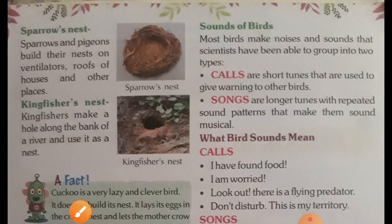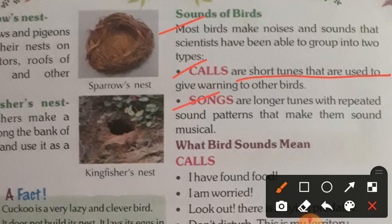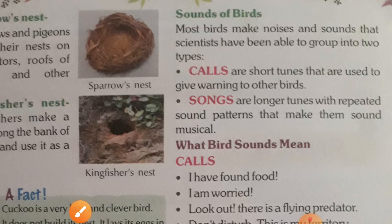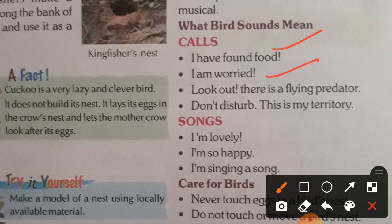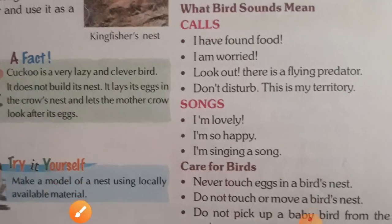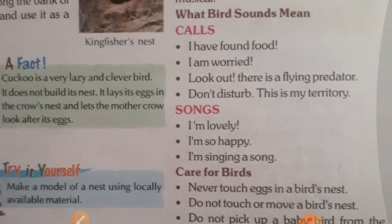Most birds make noise and sounds that scientists have grouped into two types: calls and songs. Calls are short tones used to give warnings to other birds — for example, 'I found food,' 'I am worried,' 'Look out, there is a flying predator,' or 'Don't disturb, this is my territory.' Songs are longer tones with repeated sound patterns that make them sound musical — expressing happiness or attractiveness.